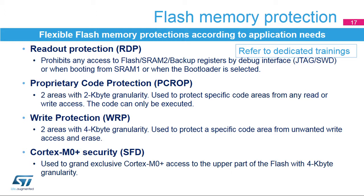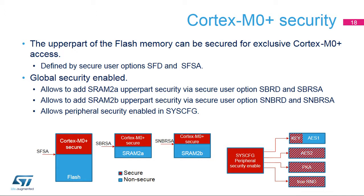The Cortex-M0 Plus security is configured using the SFD option byte. This option secures a specific flash memory area for exclusive Cortex-M0 Plus access. The Cortex-M0 Plus security area can be defined with a four kilobyte granularity. Please refer to the specific trainings about system protections and Cortex-M0 Plus security for more details. Cortex-M0 Plus security is enabled by clearing the flash security disable option. The secure flash starts from the address in the secure flash start address option. In addition to the flash memory, the SRAM 2A and SRAM 2B security can also be enabled by secure backup RAM disable, secure backup RAM start address, secure non-backup RAM disable, and secure non-backup RAM start address options.